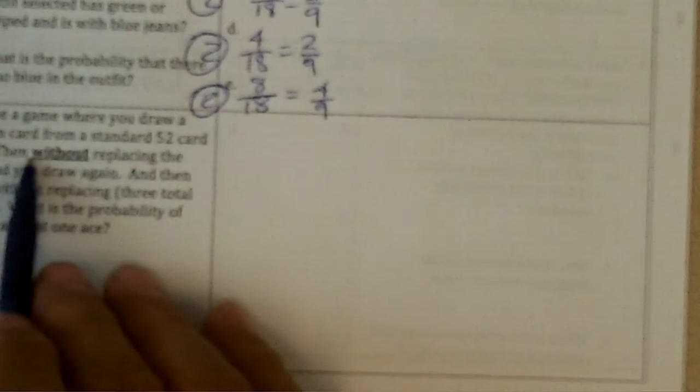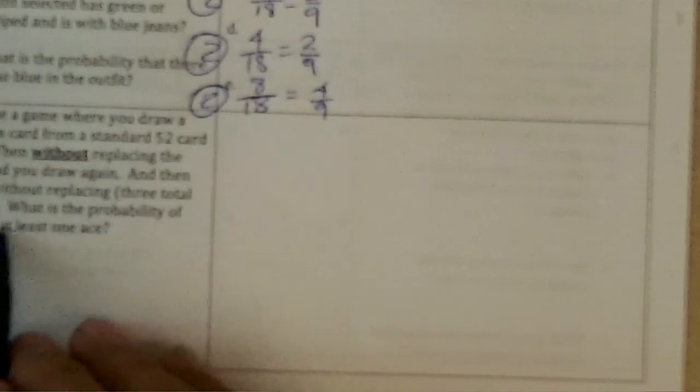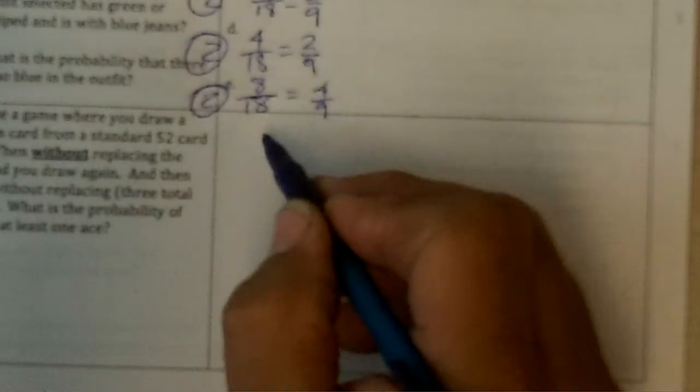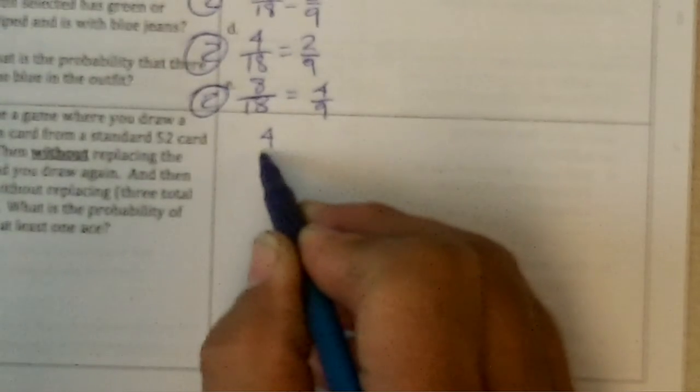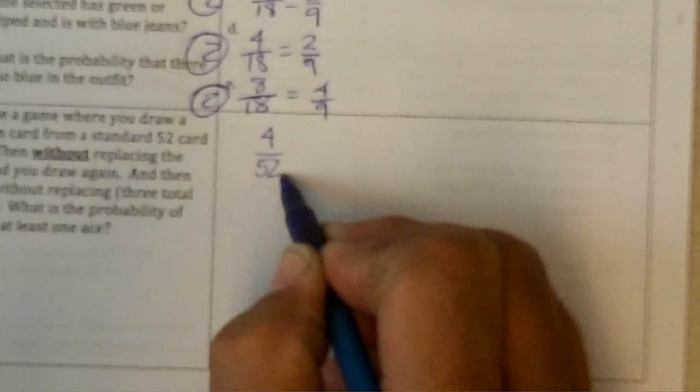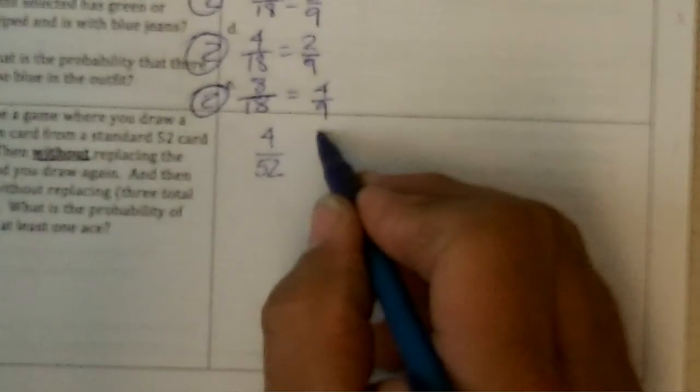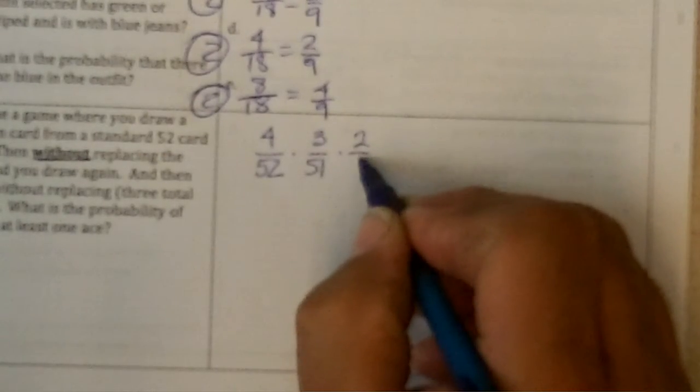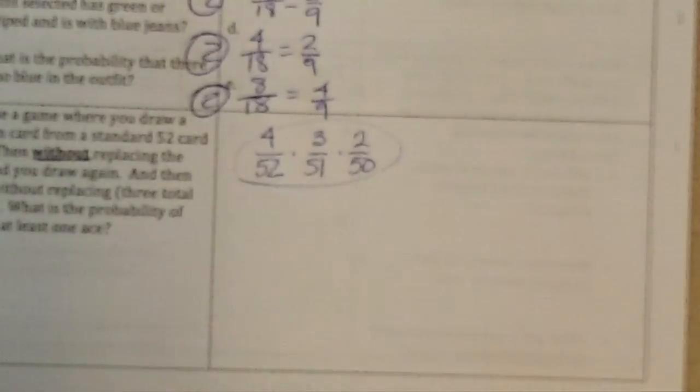And now, three. Imagine a game where you draw a random card from a deck of 52 cards. Then, without replacing the card, you draw again. What is the probability of getting at least one ace? Well, if you count trying to get an ace every time, excuse me. If you try to get an ace every time, there would be four to choose from out of the 52. Then, if we don't replace the card, then there would only be three out of 51, and then two out of the 50 cards left. That would be getting all three aces.